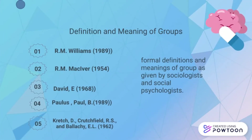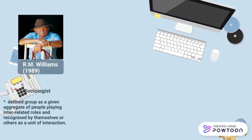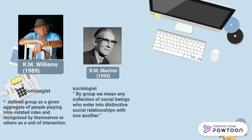Now, the definitions and meanings of groups given by sociologists and social psychologists. Sociologist R.M. Williams defined a group as a given aggregate of people playing interrelated roles and recognized by themselves or others as a unit of interaction. A group is an aggregate of certain people whose functions are interrelated, and the group is classified as a team. Next, renowned sociologist R.M. MacIver stated that by group we mean any collection of social beings who enter into distinctive social relationships with one another, meaning social relationships must occur among the individual members of a group.